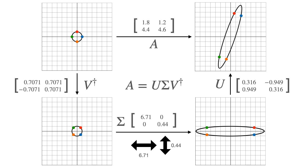Let's look at this through the singular value decomposition to see where we can capture that skinniness. Looking at the scaling matrix Σ: the horizontal scaling factor is large — 6.71 — so the ellipse is long. But the vertical scaling is only 0.44, which is very small. That's why the ellipse is so skinny: we're compressing it vertically to almost a line. The degeneracy of this transformation is really encoded in that 0.44.